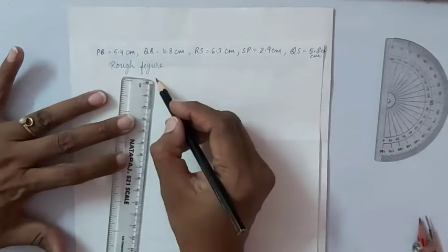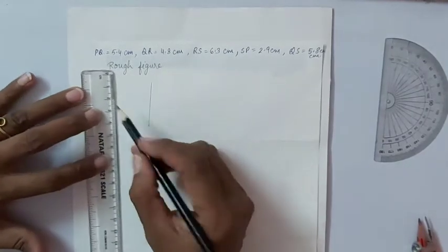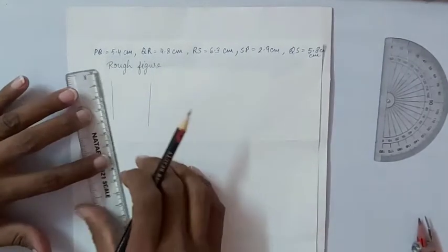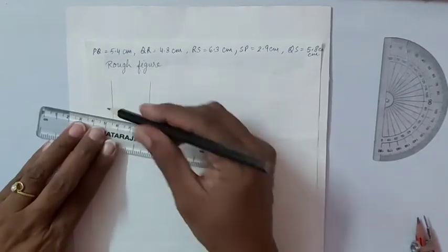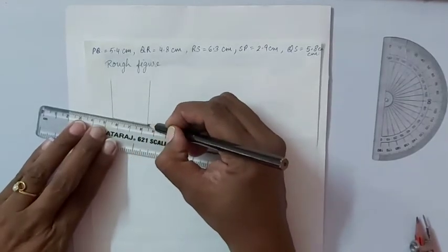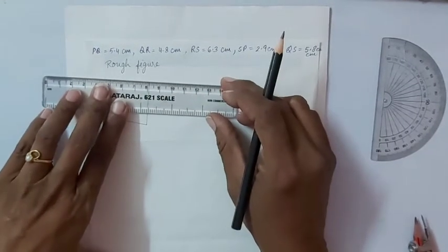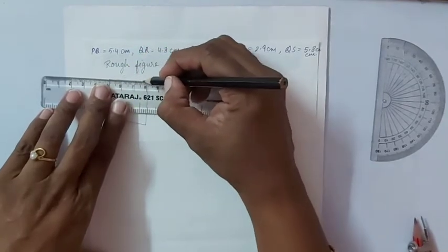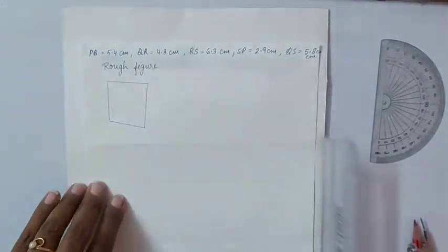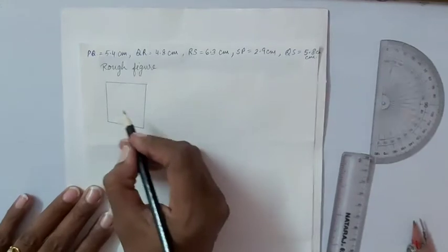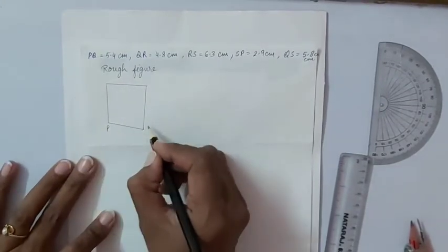First of all we will draw a rough figure. Rough figure means we will use ruler but we will not draw the line segments measuring. And then we will label it PQRS is a quadrilateral.